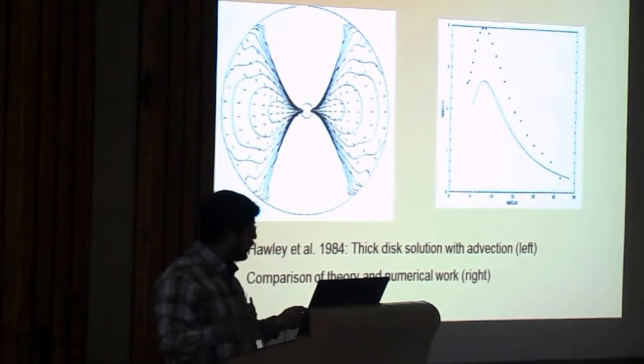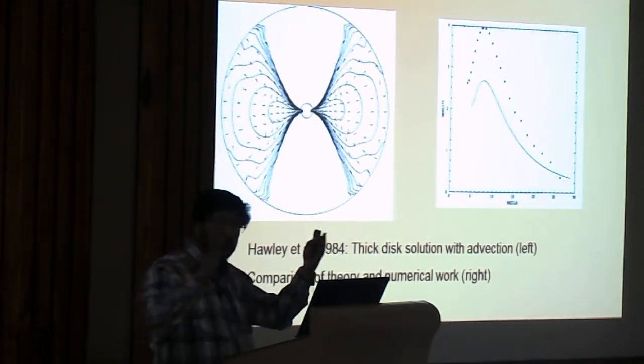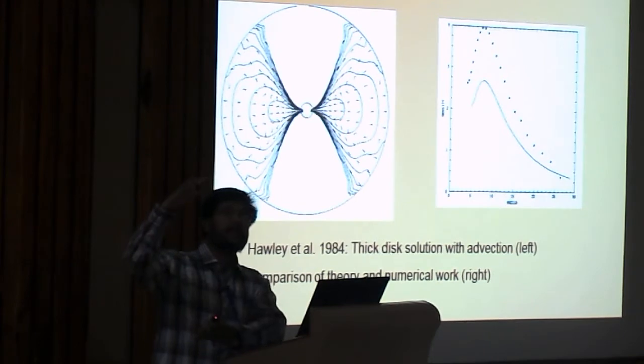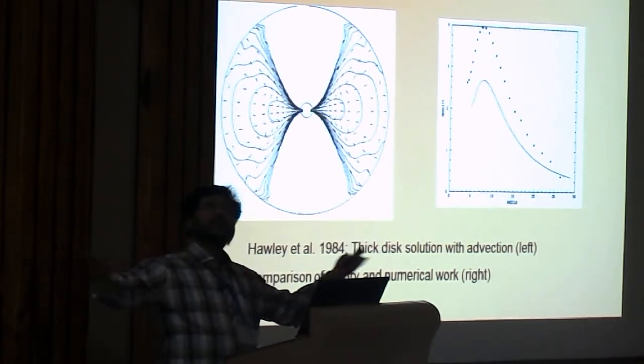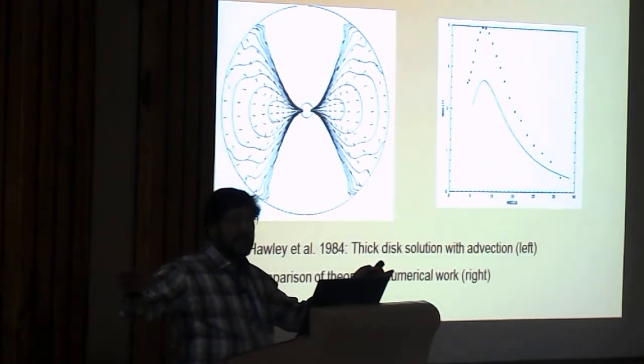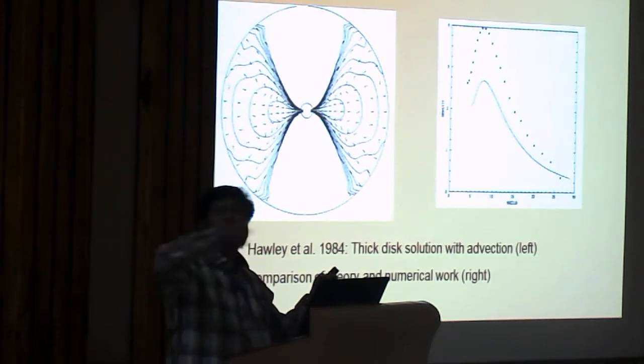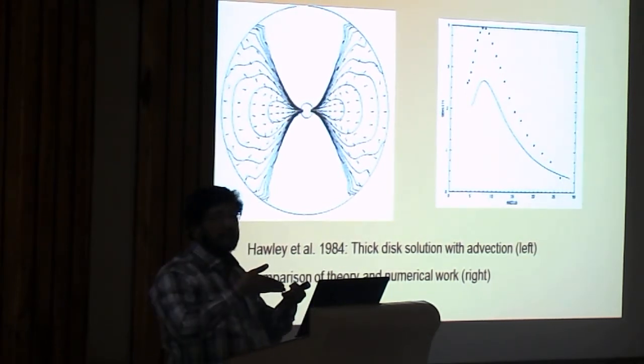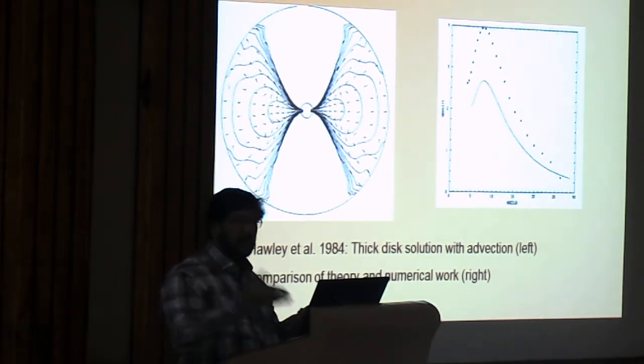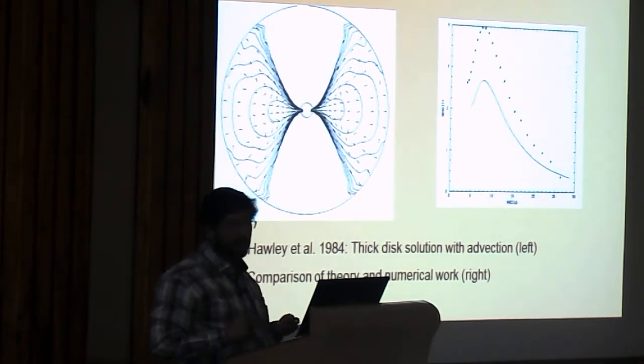At that time there was no theory for the matter which is falling onto a black hole. There was only theory for the thick accretion disk or thick accretion disk which normally orbited in. So, there was no advection term was attached. Advection term was attached only with the Bondi flow.